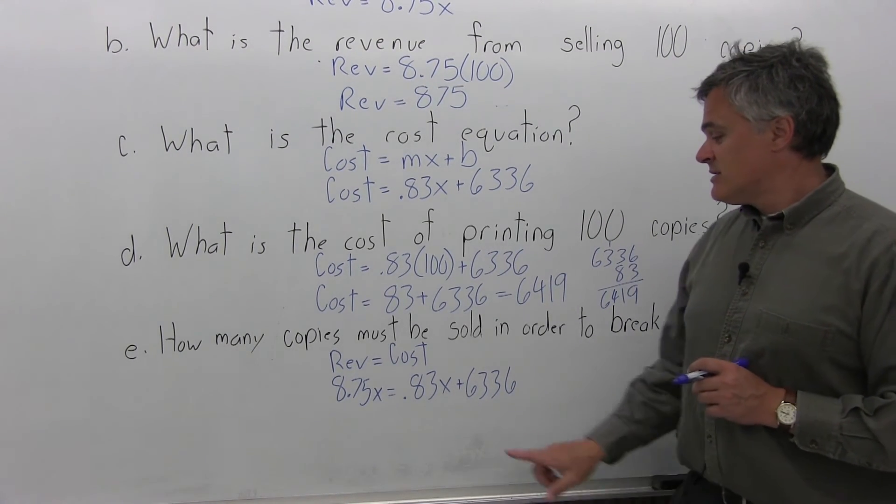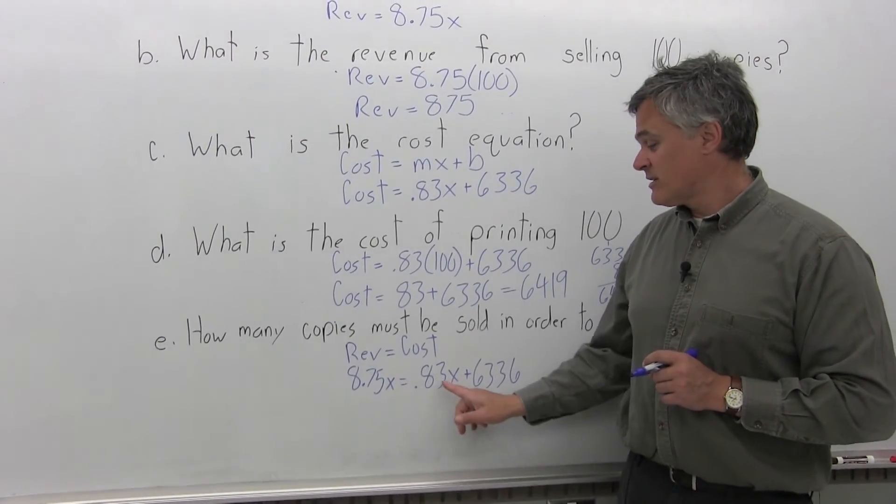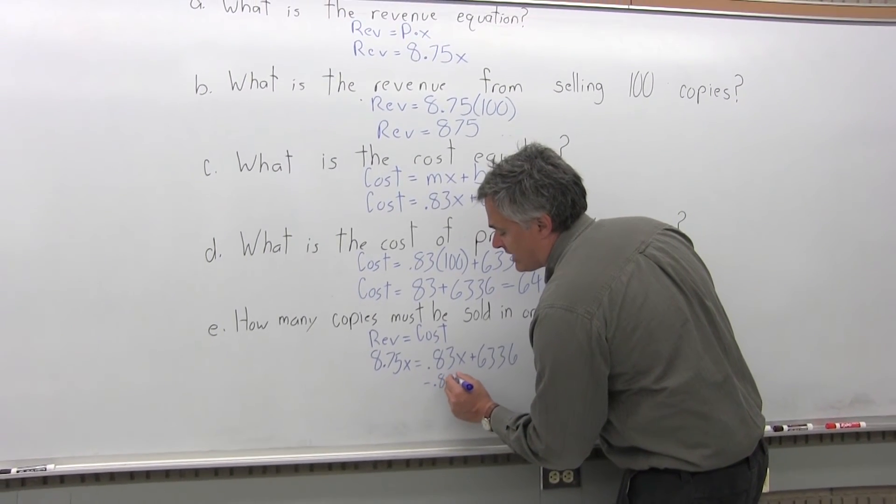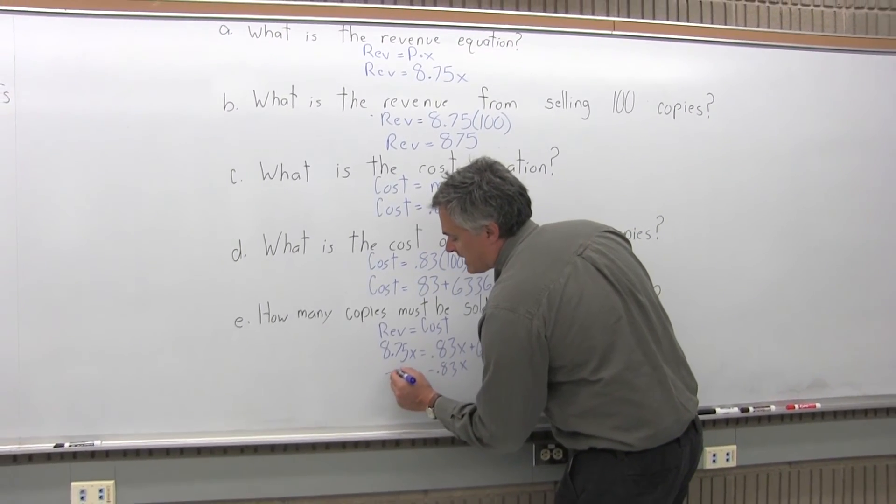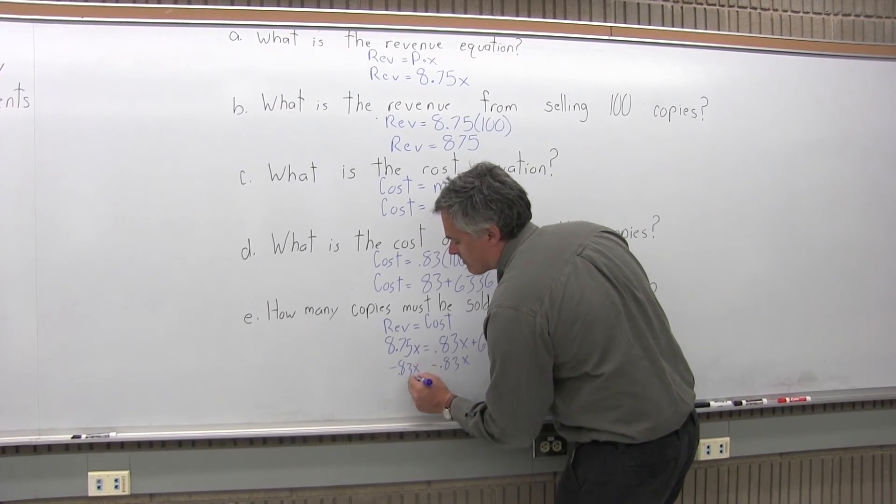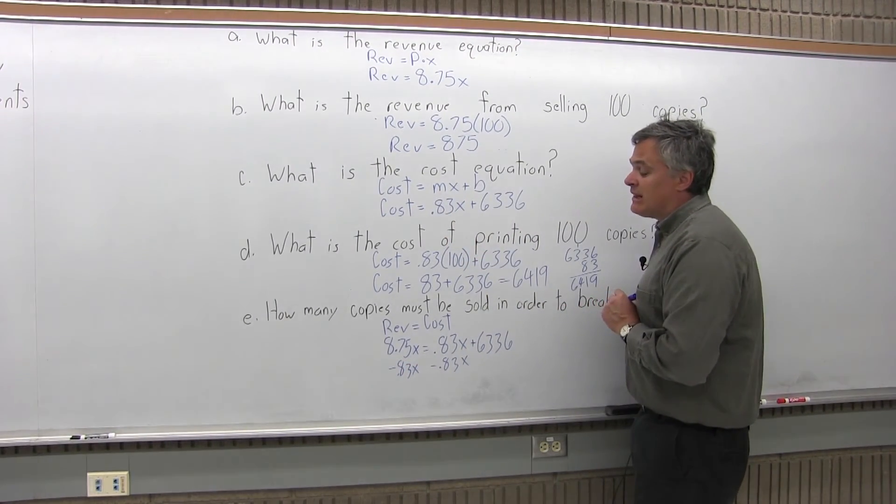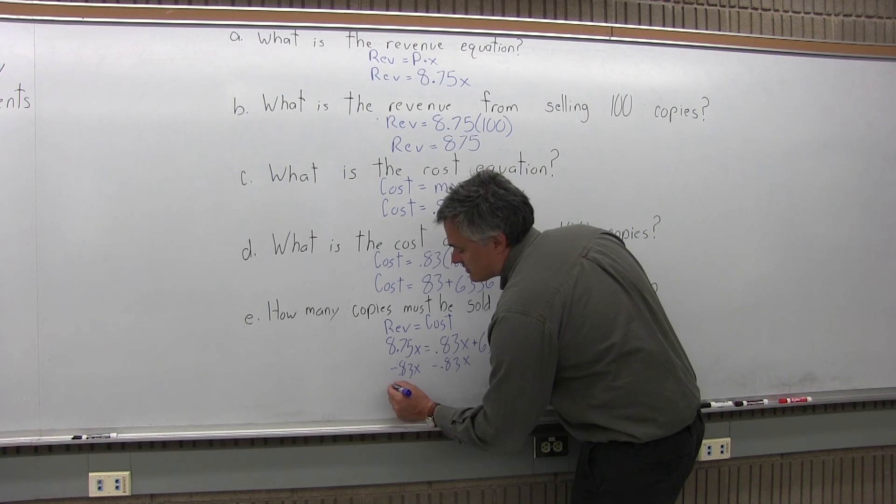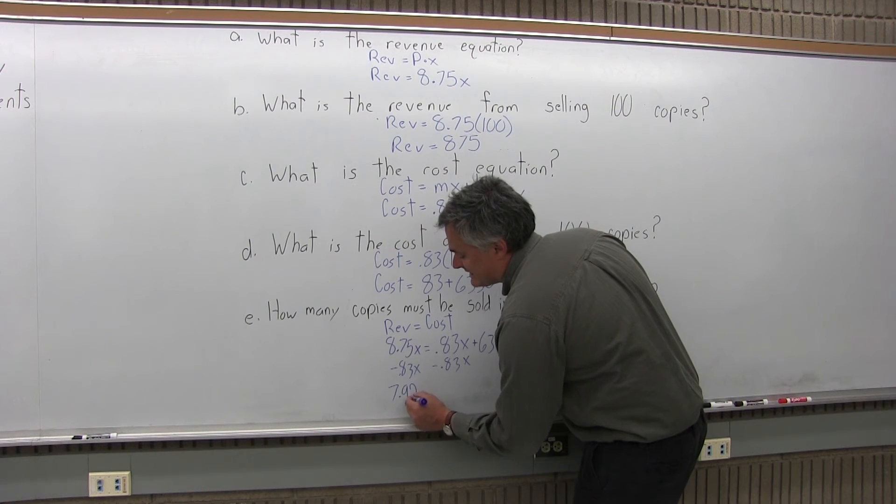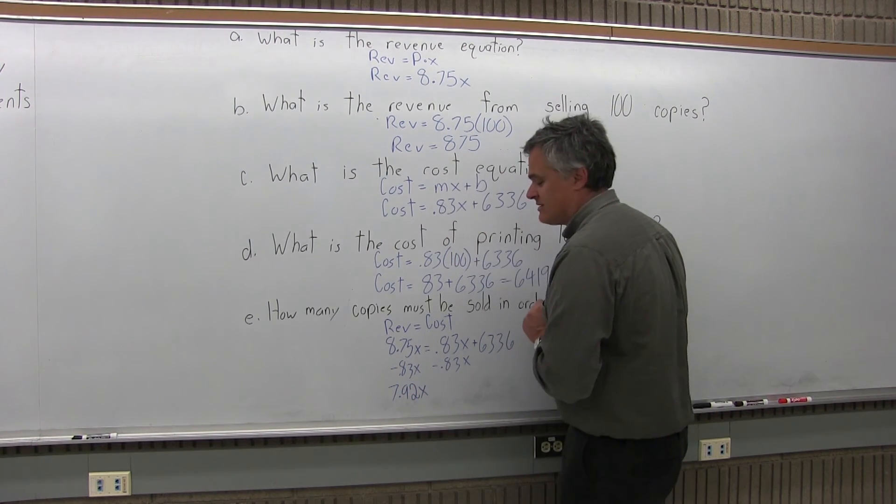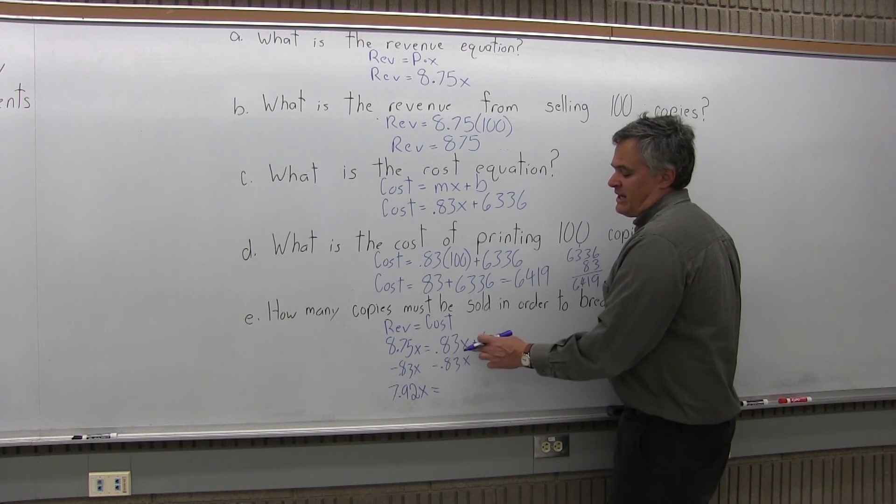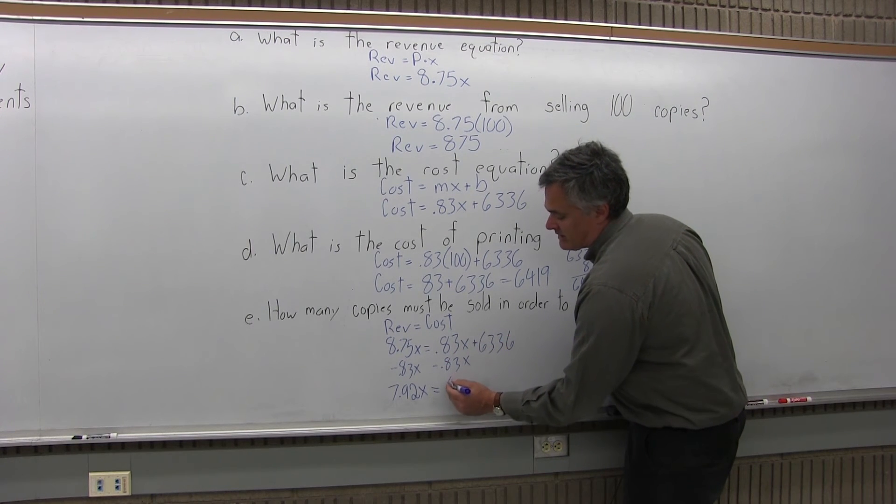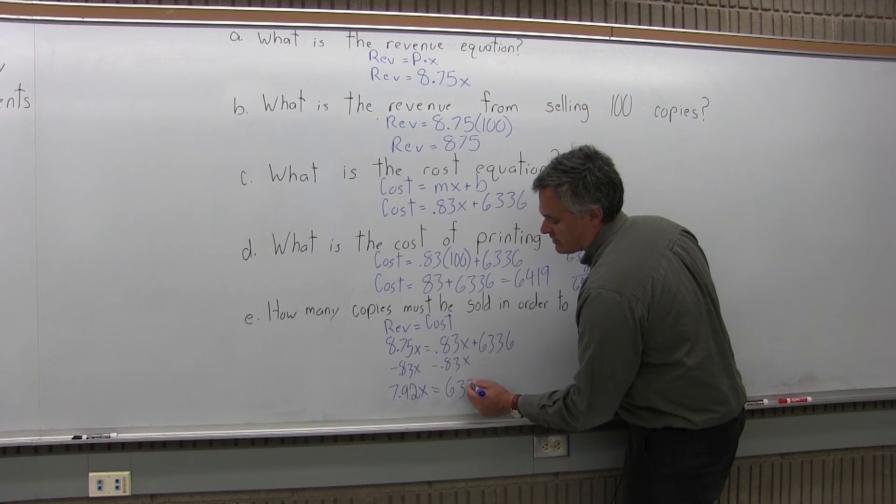Now solve for X. At this point I have X's on both sides of the equation. I'd like to put them together, so I'm going to subtract .83X from both sides. On the left, $8.75X minus .83X gives me $7.92X equals, and on the right, the positive .83X and negative .83X have cancelled, leaving 6,336.